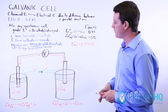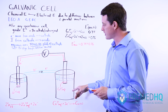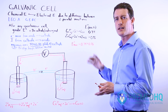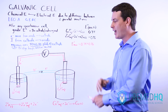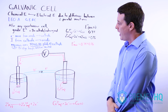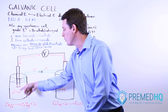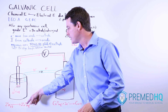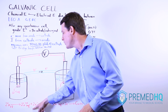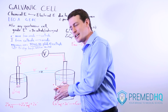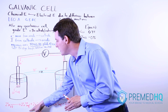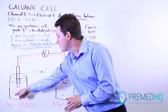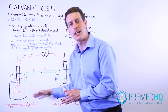The cathode is drawn on the right and the anode on the left, which is typical in illustrations. On the anode side, solid zinc is being oxidized — it loses two electrons, which is oxidation — and that yields a zinc cation. So the solid zinc from the anode is being converted into aqueous zinc cations.